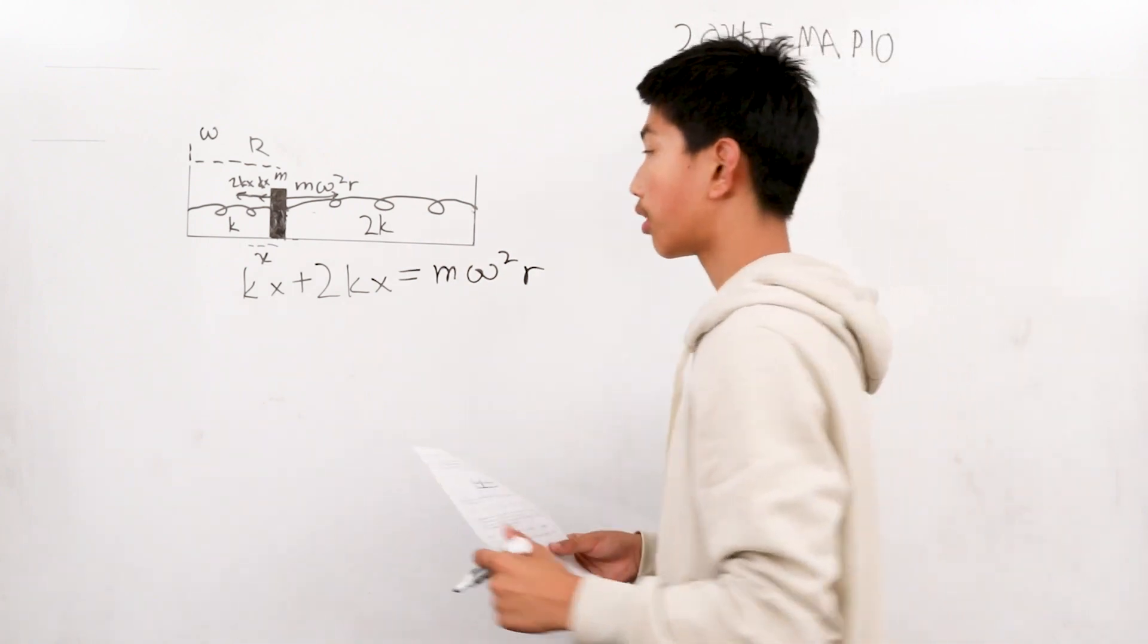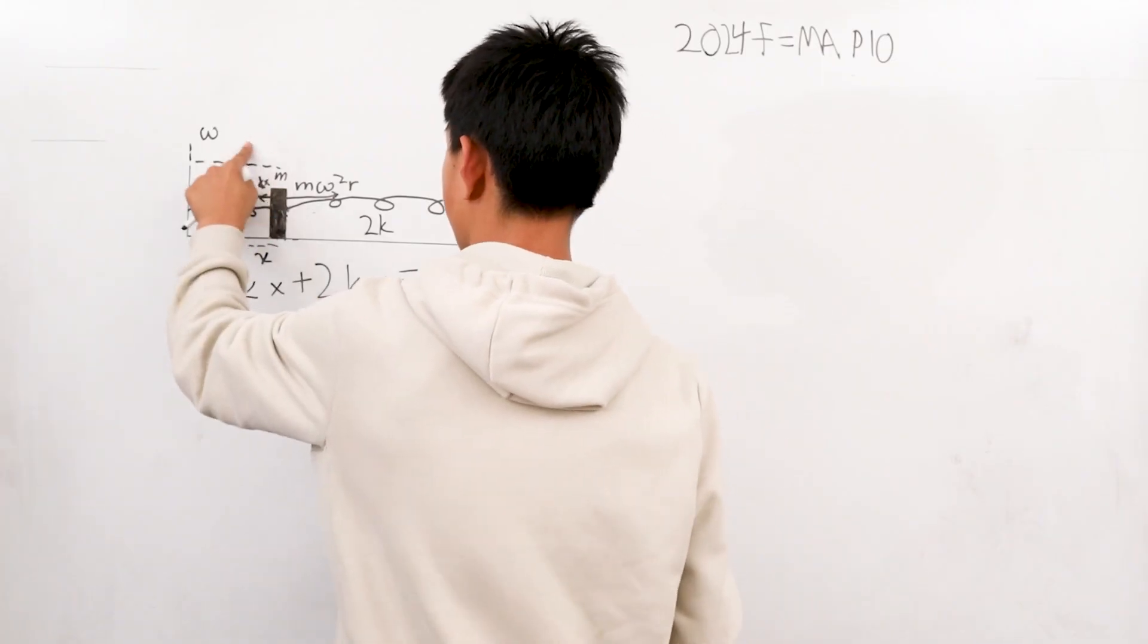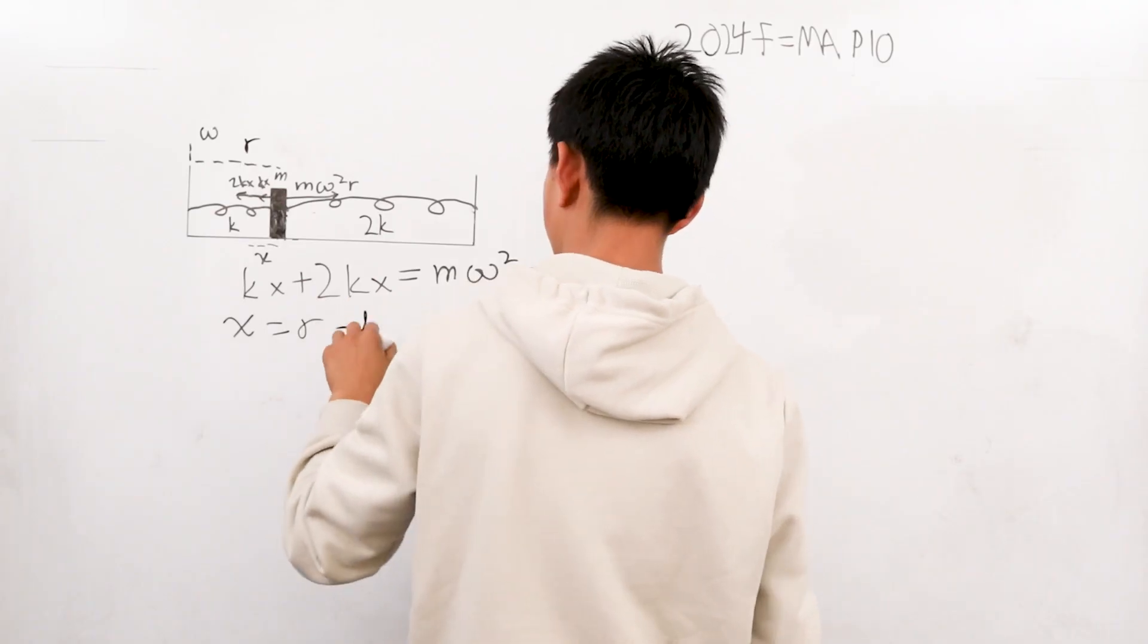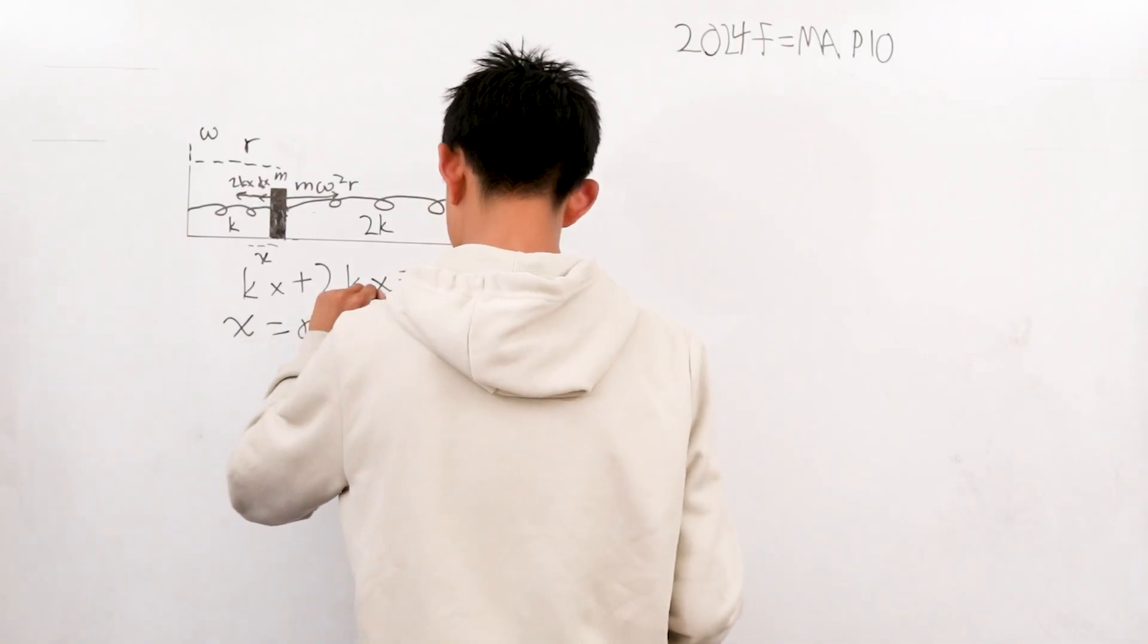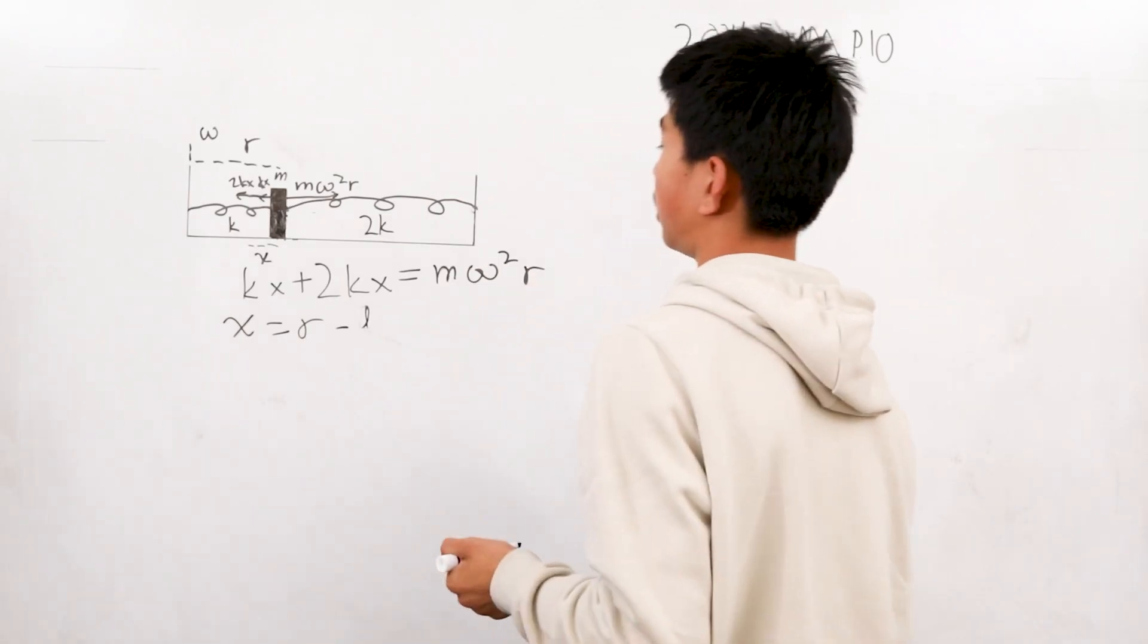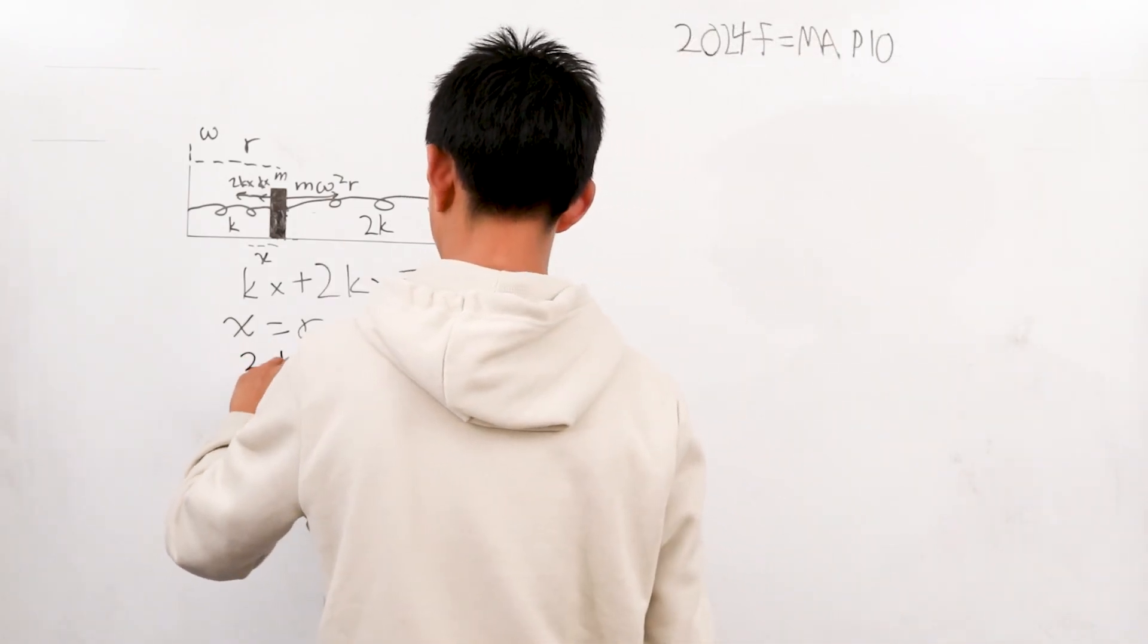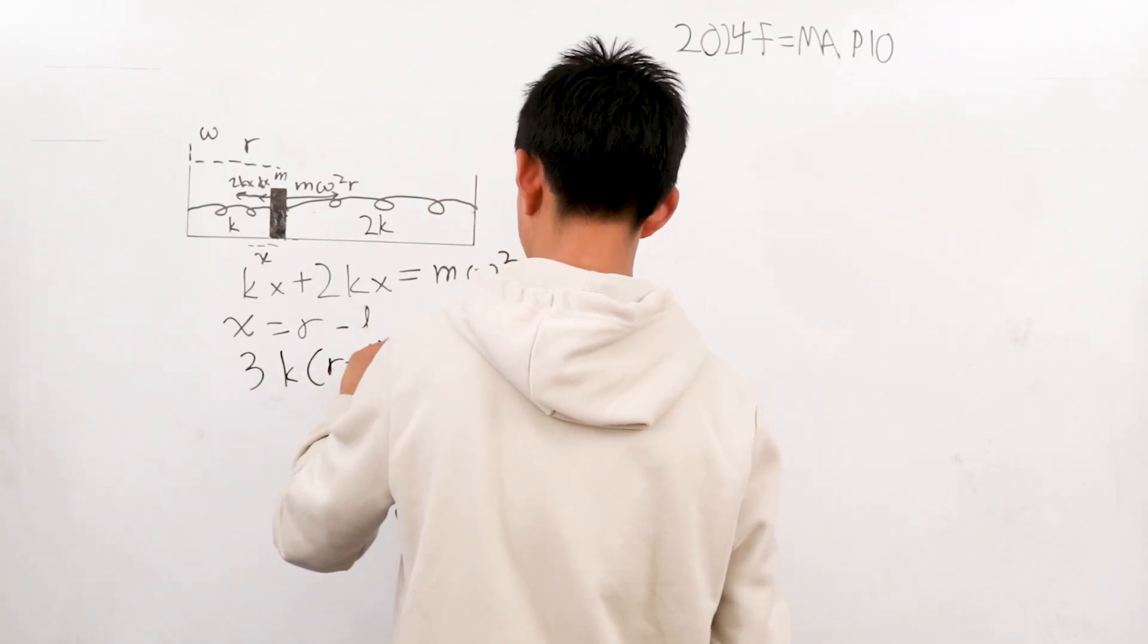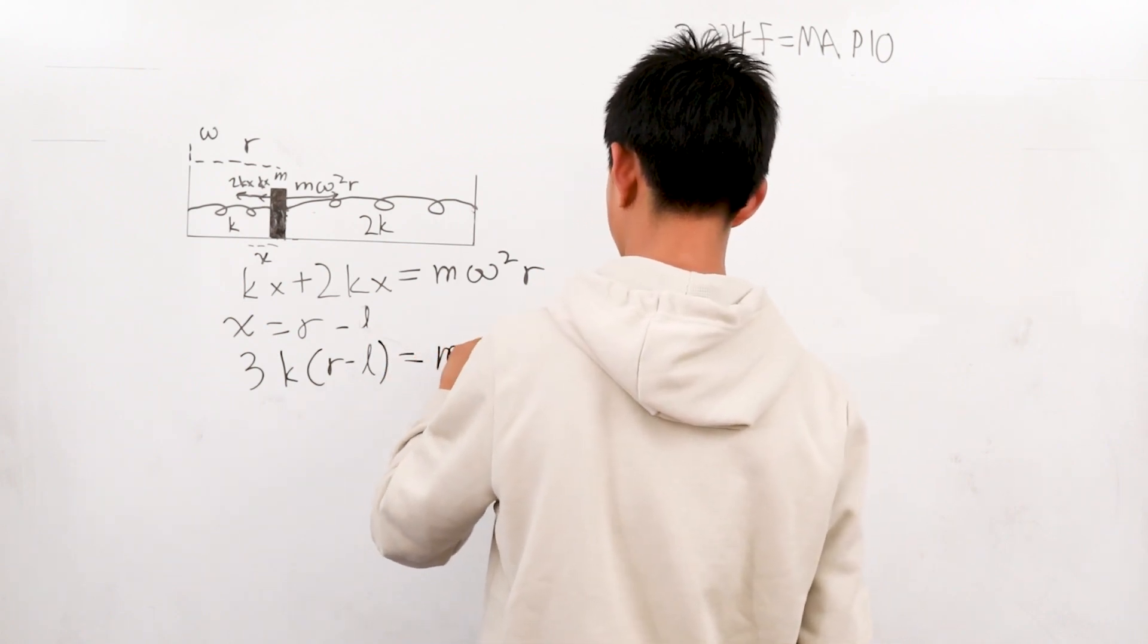Since we know that x is equal to our length R minus L, we can plug this in our equation, so this becomes 3K times R minus L equals M omega squared times R.